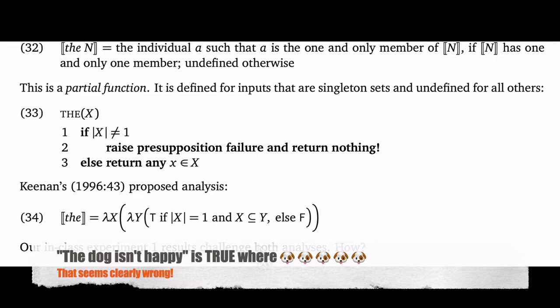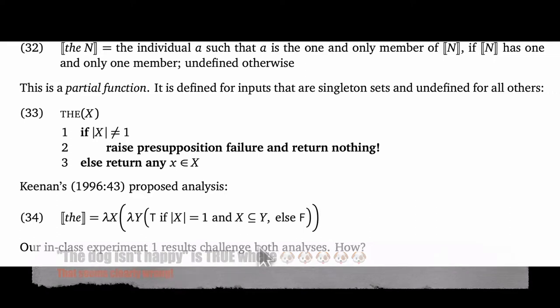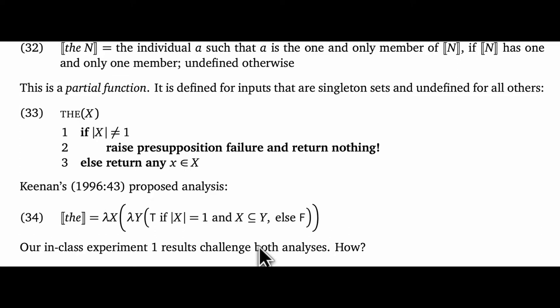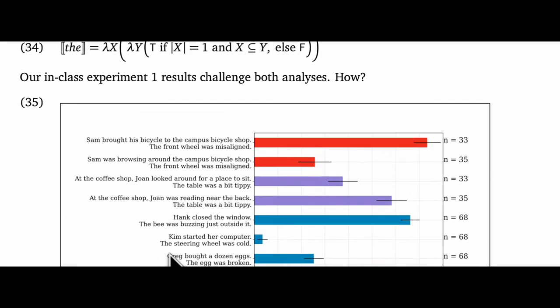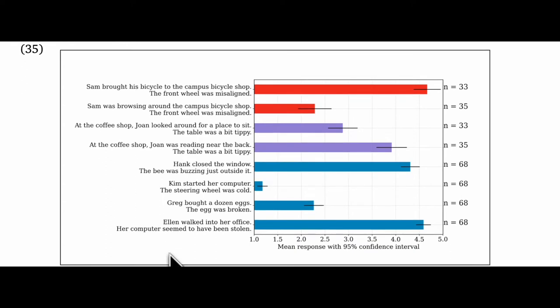But that seems pretty clearly wrong, so I'm inclined towards Partee's presuppositional theory. However, I think both these theories have a lot of trouble explaining our own experimental data. Recall that early in the quarter, we did an experiment in which you rated the naturalness of specific continuations in two-sentence mini-narratives. And in 35, we have a summary of those results.